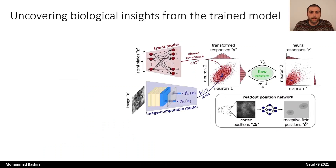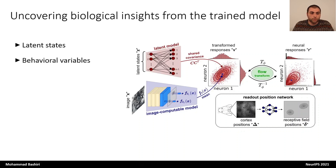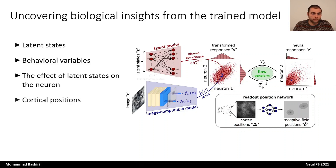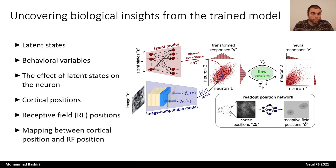So now let's go back to the question of how we can use this model as an analysis tool and learn something about the brain. We have the latent states that can be inferred from the model, behavioral variables from the data, the effect of the latent dimensions on neurons through the factor loading matrix C, cortical positions, receptive field positions from the model, and the mapping between the cortical positions and the receptive field positions. In the next few slides, I'm going to use a trained ZFA model with three latent dimensions to show how the model can be potentially used as a tool to gain some insights about the brain.